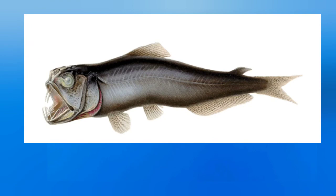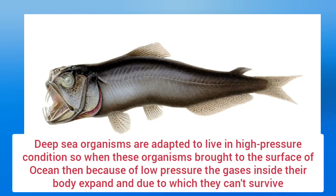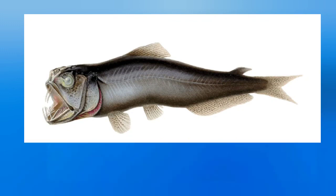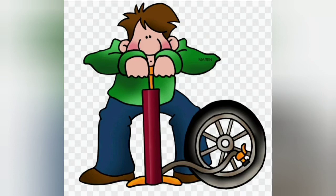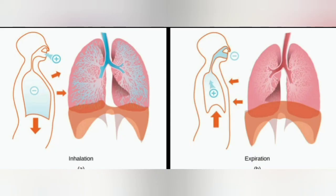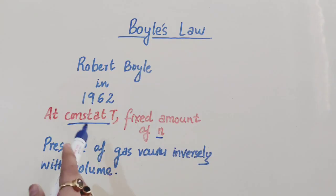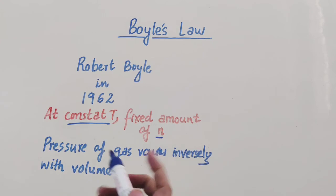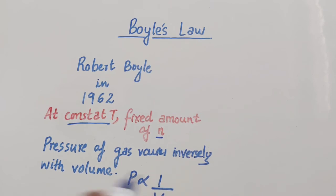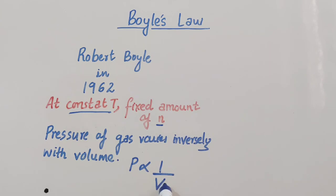Deep-sea organisms are adapted to live in high-pressure conditions. When brought to the ocean surface, the low pressure causes gases inside their bodies to expand, and they die upon reaching the surface. Similarly, the working of a bicycle pump, inhalation and exhalation in lungs, and the working of a syringe are all based on Boyle's Law: pressure varies inversely with volume, so increasing pressure decreases volume and vice versa.